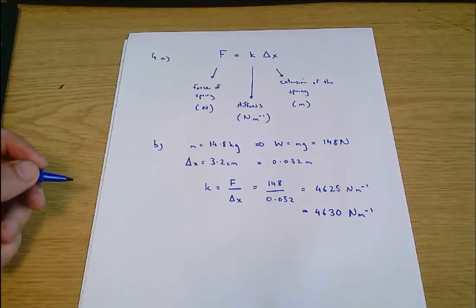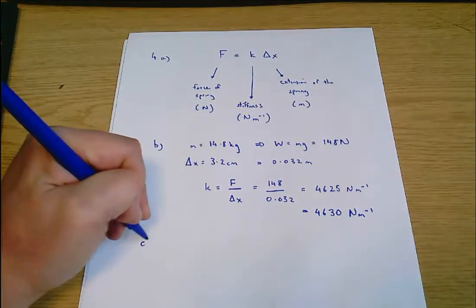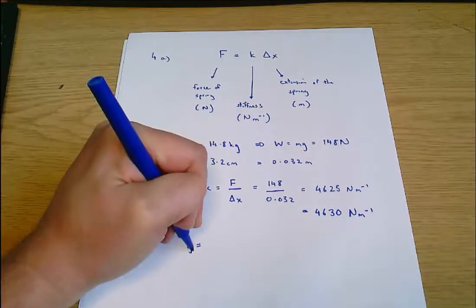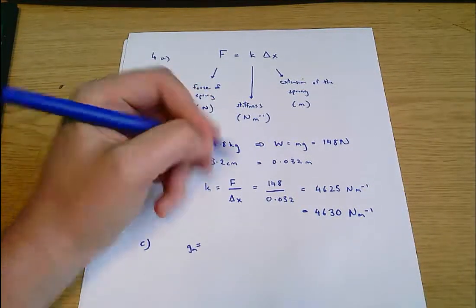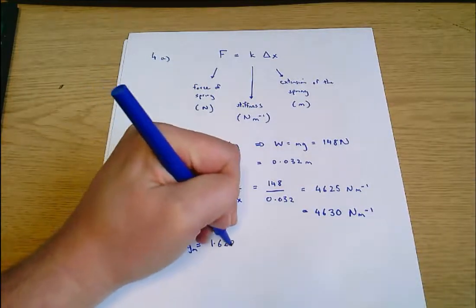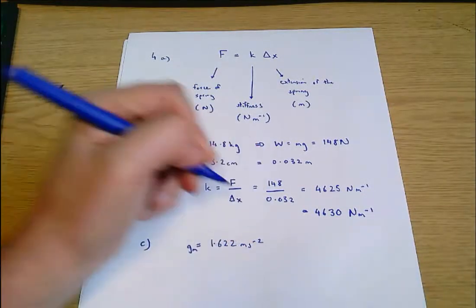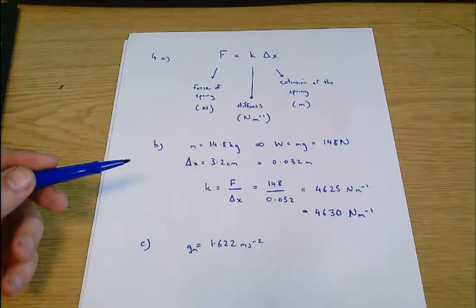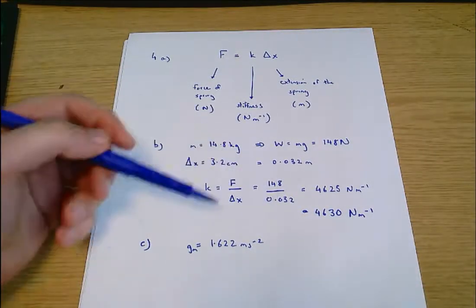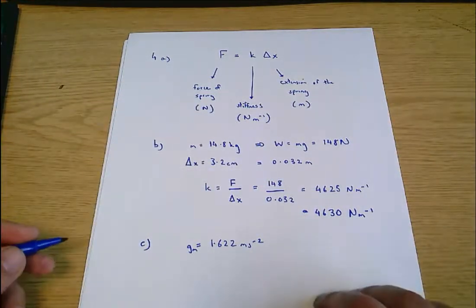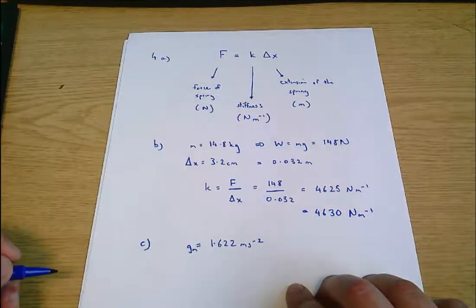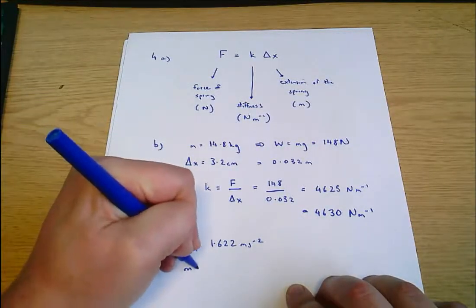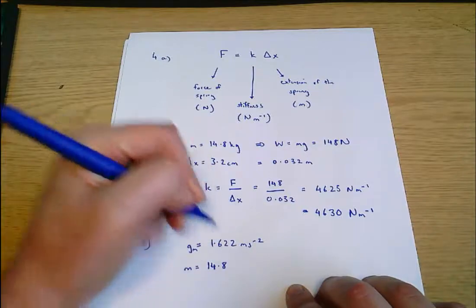Part C says the acceleration due to gravity on the surface of the moon, g sub m for moon is 1.622 meters per second per second. How do you expect your answer to change? How far would we expect this spring to extend? Sorry is the question. If the same mass 14.8 kilograms was hung from it on the surface of the moon.